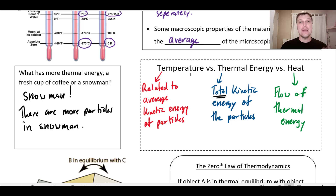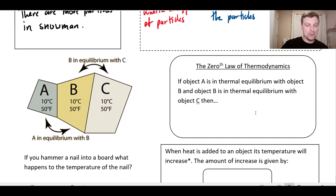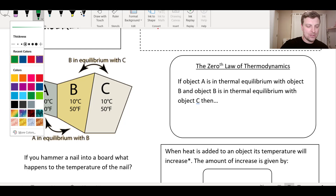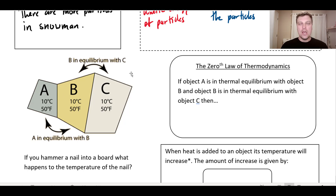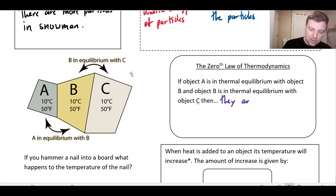With thermodynamics, there are a number of laws that dictate how heat flows between different objects. The first one we'll talk about is called the zeroth law of thermodynamics — it wasn't the first one discovered. Scientists had already discovered the first and second laws and went back and said they needed to define this zeroth law so the rest makes sense. The zeroth law says: if object A is in thermal equilibrium with object B, and object B is in thermal equilibrium with object C, then they are all at the same temperature.